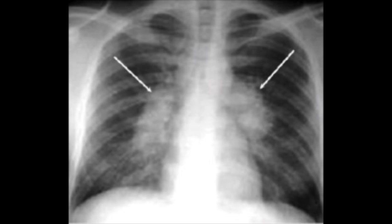If you guessed this first chest x-ray was primary TB, you are correct. Primary TB will typically show hilar adenopathy as the most common manifestation. Yet unfortunately, a lot of the time, the chest x-ray is normal in primary TB.